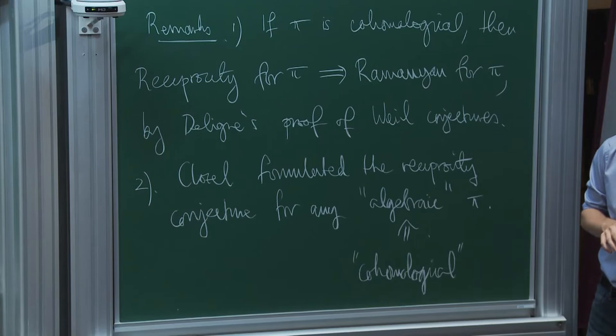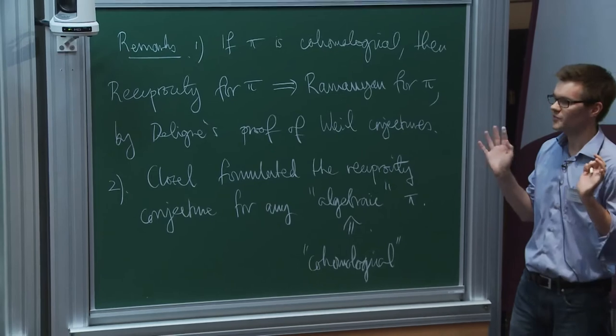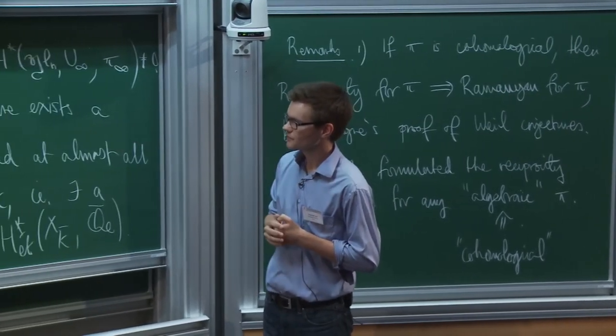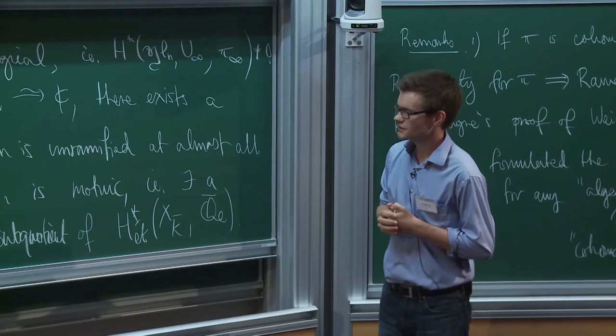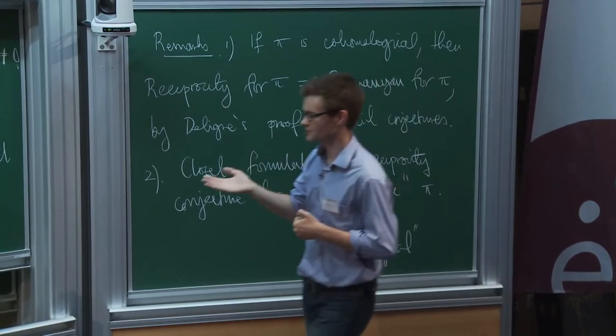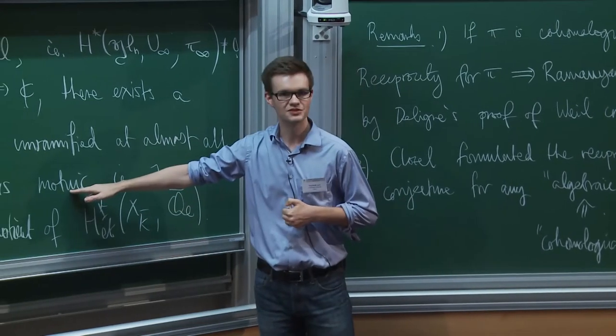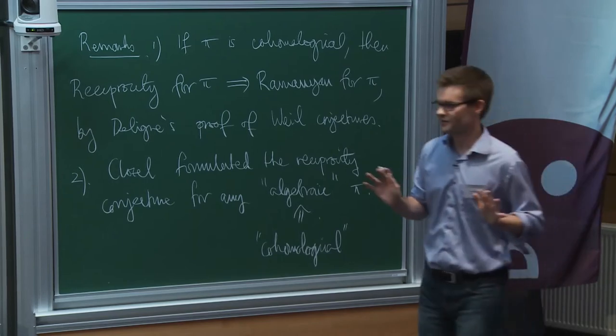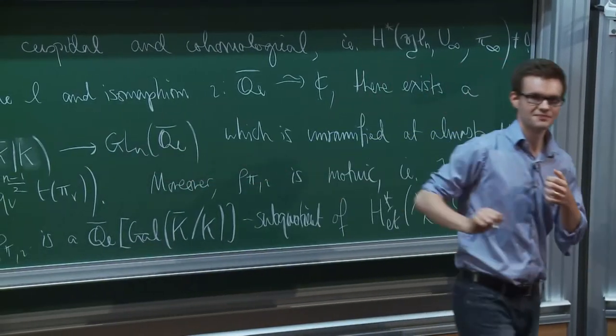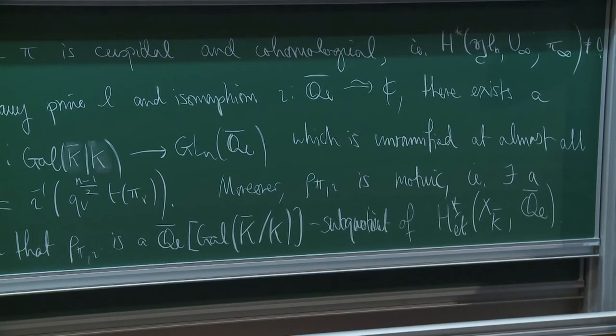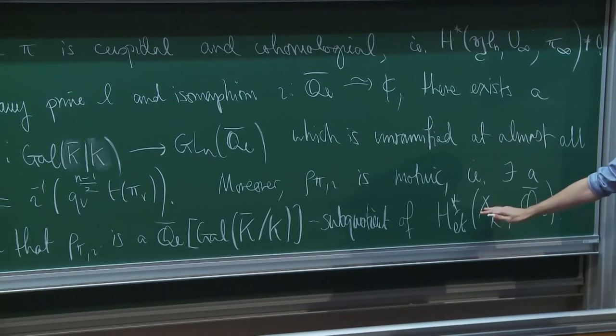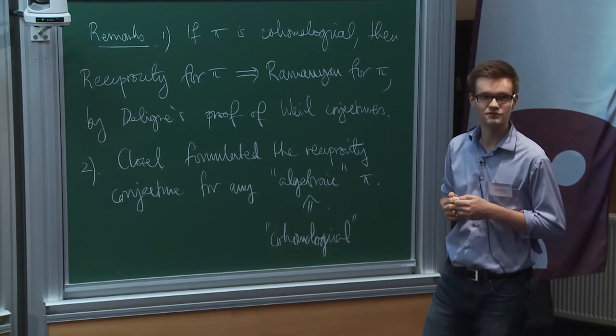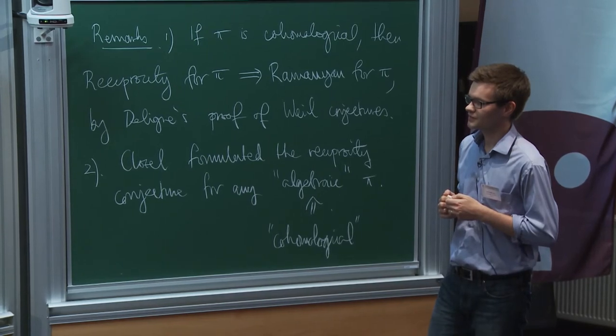Then the assertion is, this is the reciprocity part, for any prime L and isomorphism iota between QL-bar and complex numbers, there exists a Galois representation. Let's say a continuous irreducible representation, rho_pi_iota, from Gal(k-bar over k) to GLn over QL-bar, which is unramified at almost all places and again at almost all places satisfies rho_pi_iota of Frobenius at that place equals, and this is more or less the same condition that Arnaud had, it's just a twist due to normalizations.